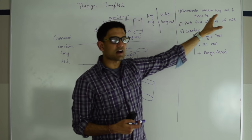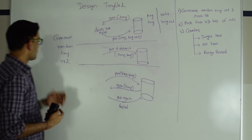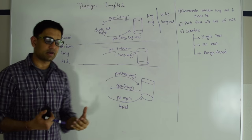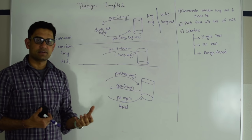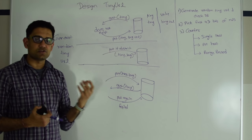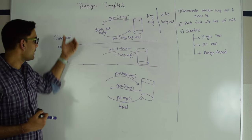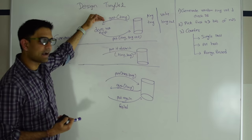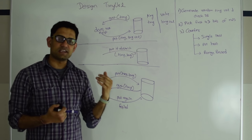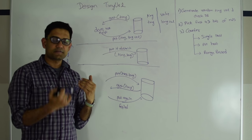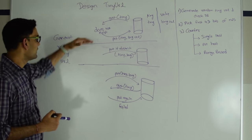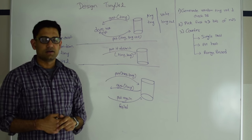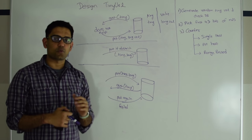The first technique is to generate the tiny URL and then check the database. A user requests to generate a tiny URL for their long URL. The worker host gets the request, generates a random tiny URL, then does a GET on that tiny URL to check if it already exists in the database. If that random tiny URL does not exist in the database, he can PUT this tiny URL and longer URL into the database. This works most of the time, but sometimes it won't.